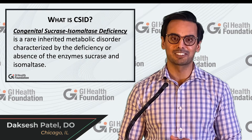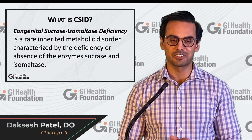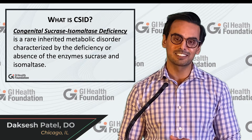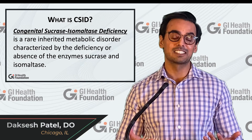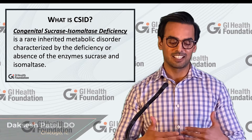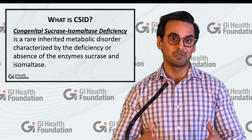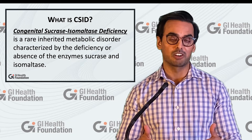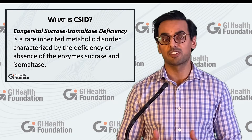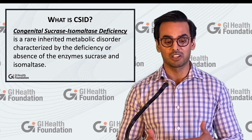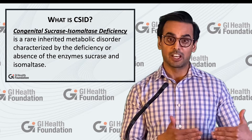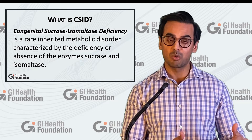What is CSID? CSID stands for Congenital Sucrase-Isomaltase Deficiency. This is a disease state where you have a lack of an enzyme that you need to break down sugar, and you may not have this enzyme because of an inherited reason or because of an acquired reason.